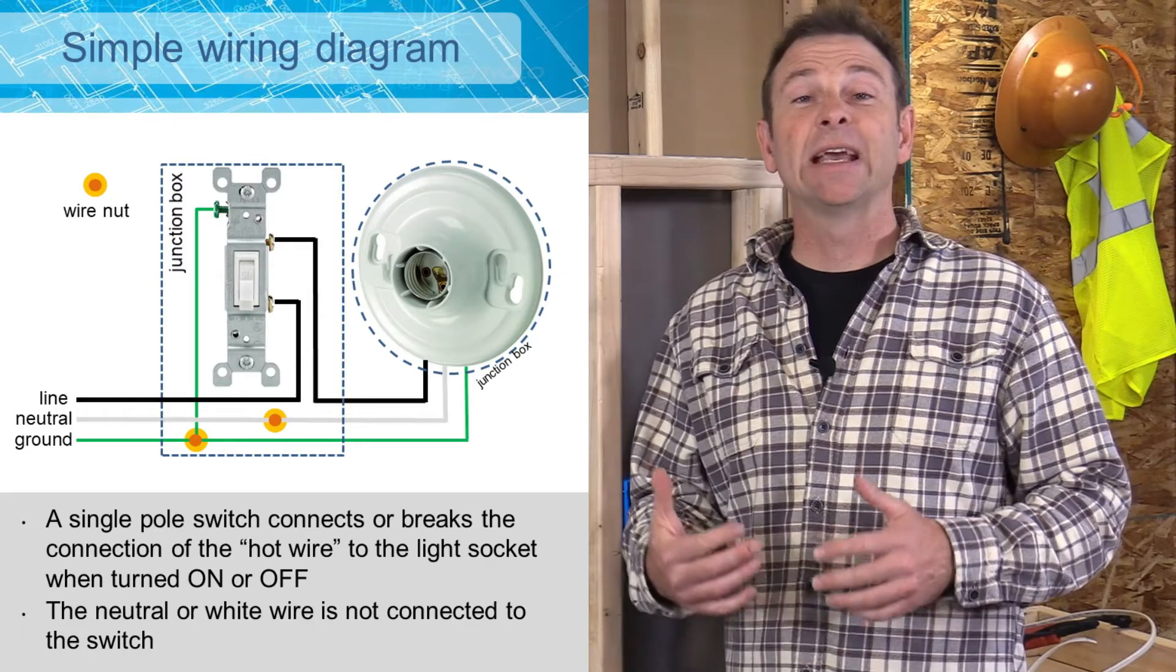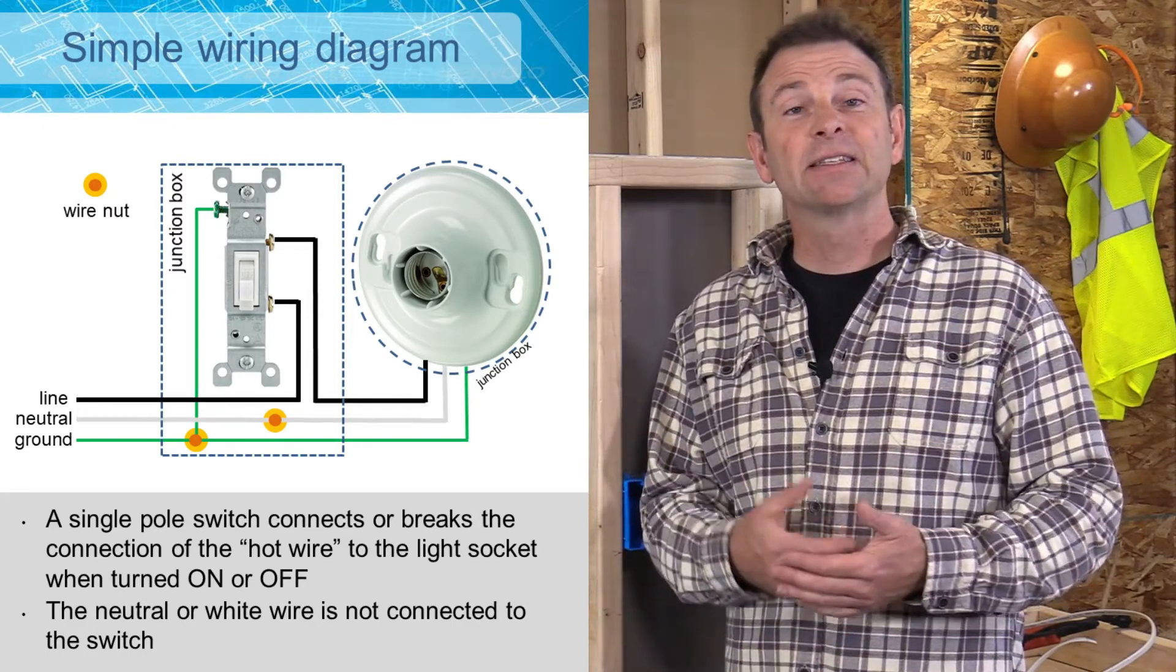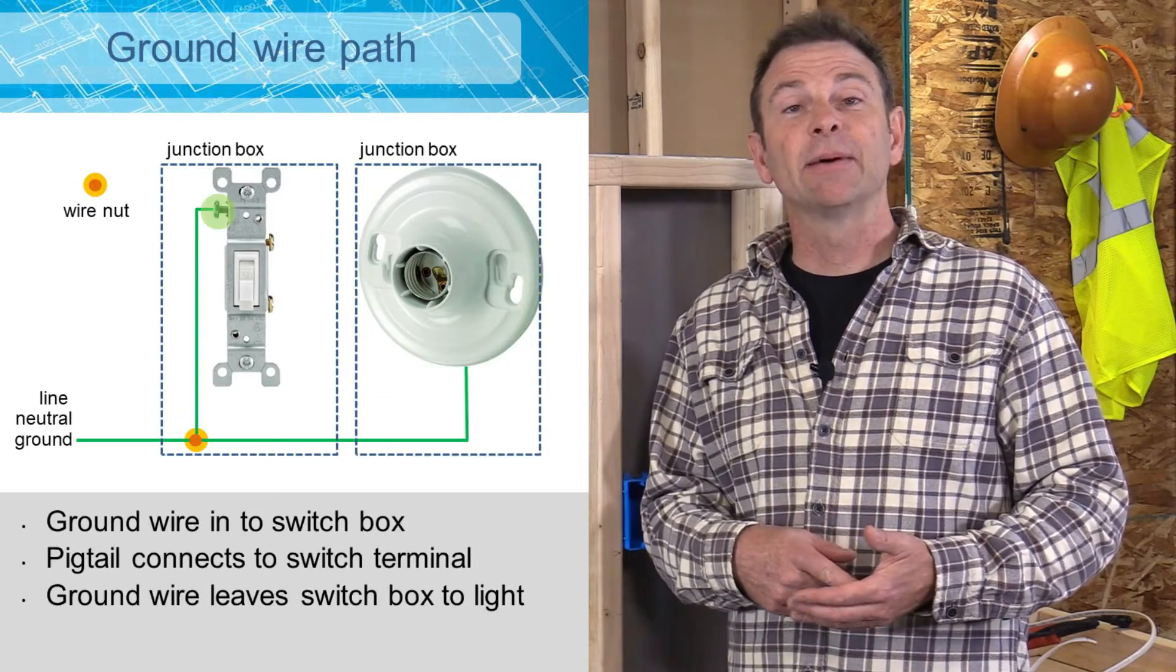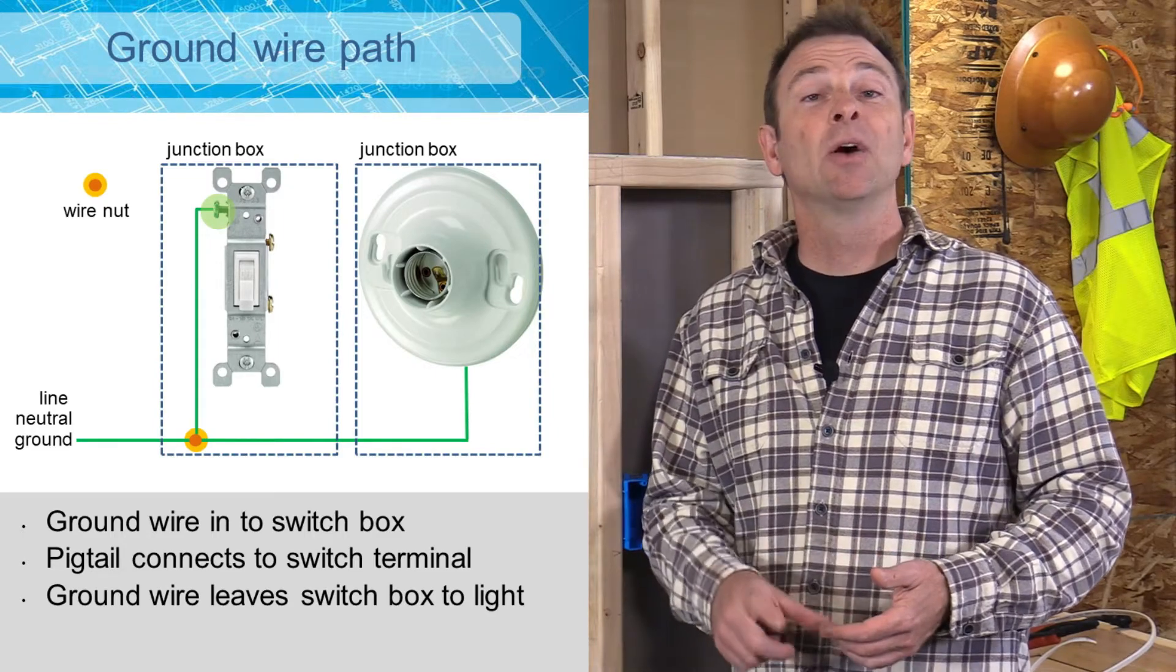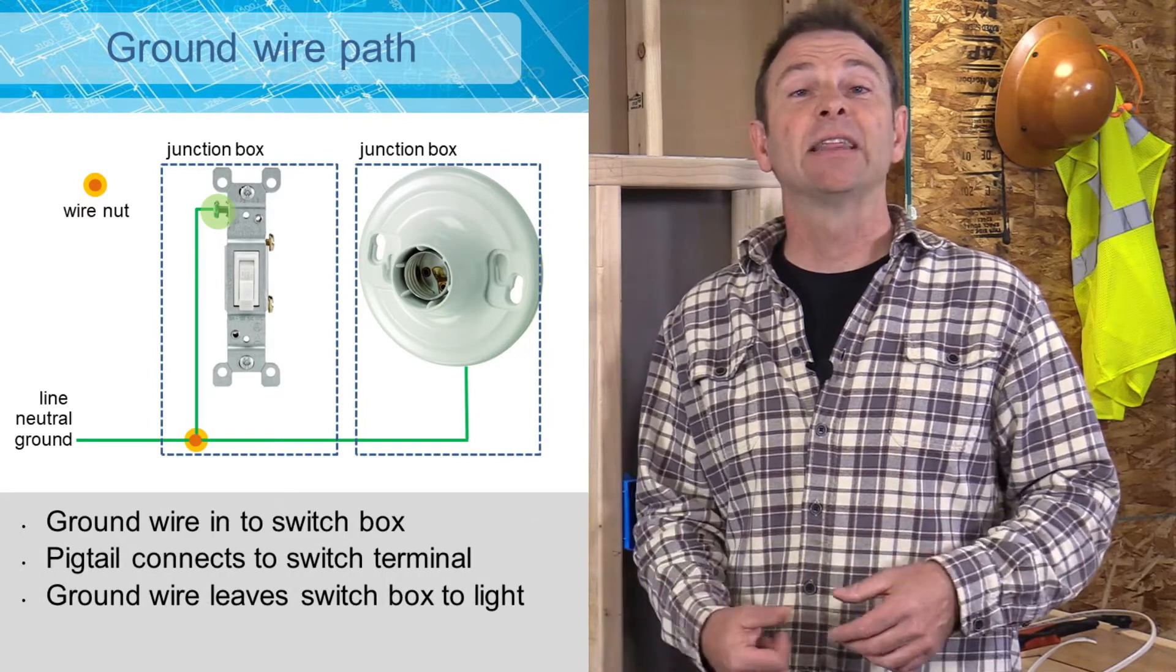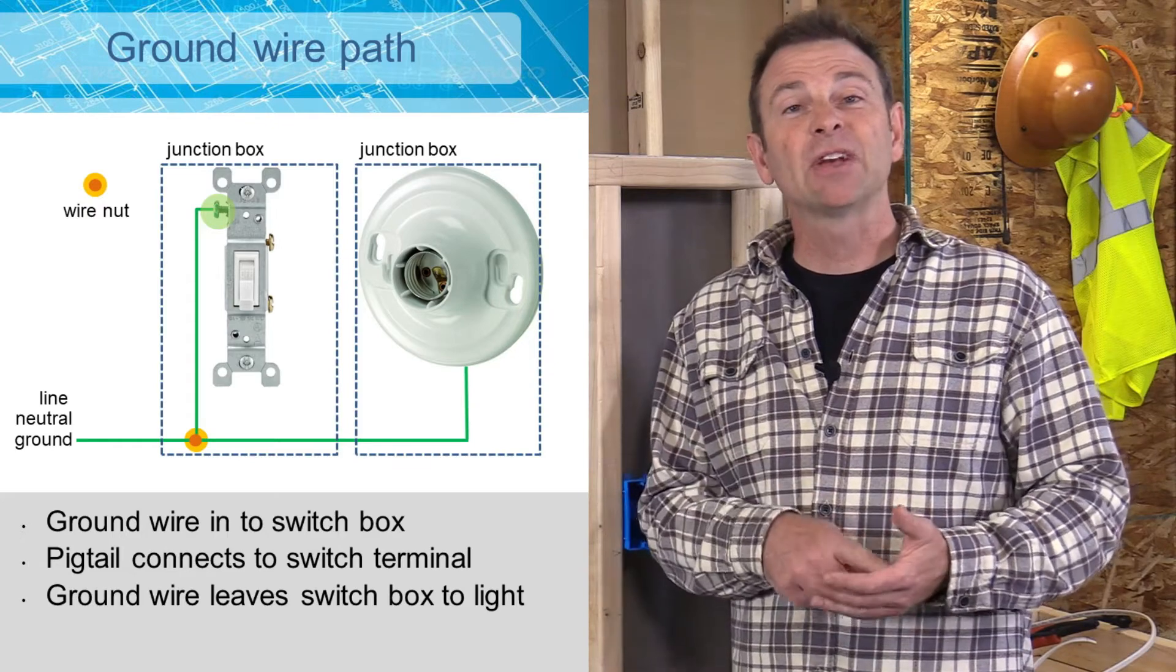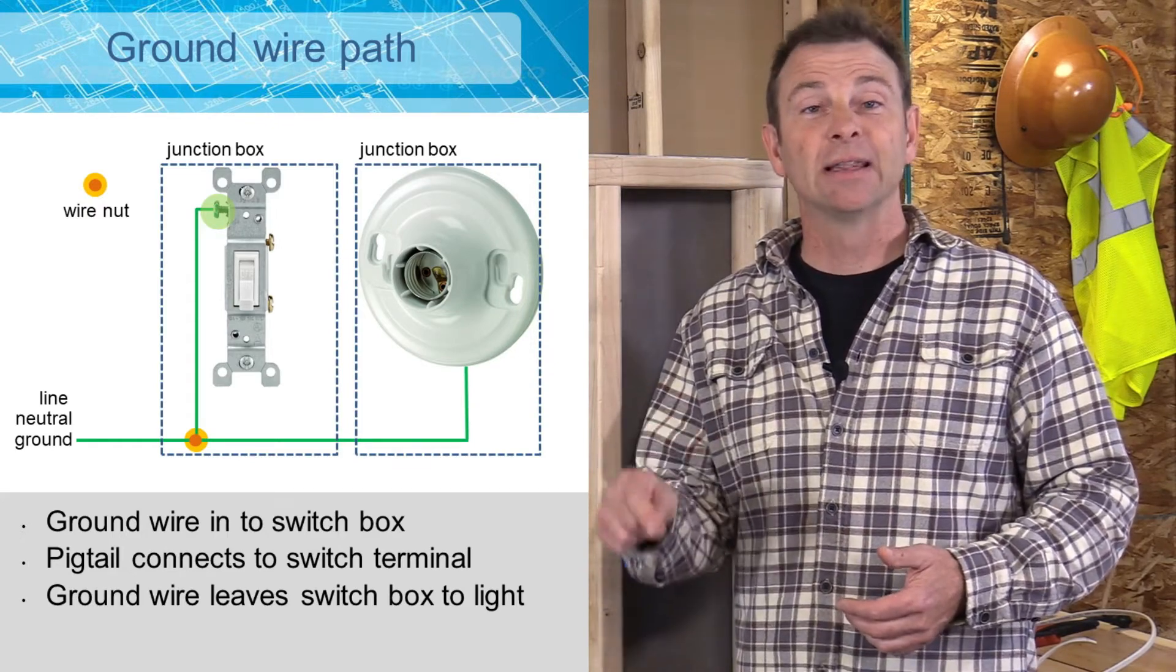Here on the screen you see a schematic of what this circuit would look like. So let's follow these conductors in, starting with our ground. So we have a ground wire that's coming in. You're also going to see a connection to the switch with a pigtail. This is a short piece of wire. If you need more information about your pigtail, check on that lesson that we offer, that mini lesson. The ground is also going to leave out of this box and go straight to our light fixture.